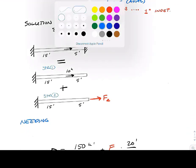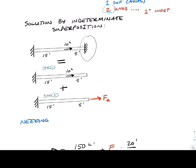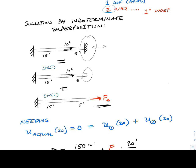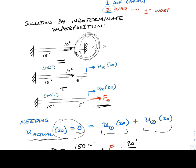We take the actual structure and represent it as a determinate structure by releasing the wall at the right end and freeing it. We then add the solution for the same determinate beam with the wall force modeled as an applied external load. The compatibility equation requires the actual axial deflection at 20 feet to be zero, so: axial deflection in structure 1 at 20 plus axial deflection in structure 2 at 20 must equal zero.